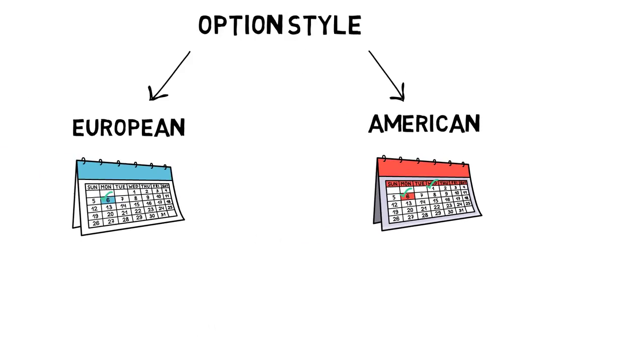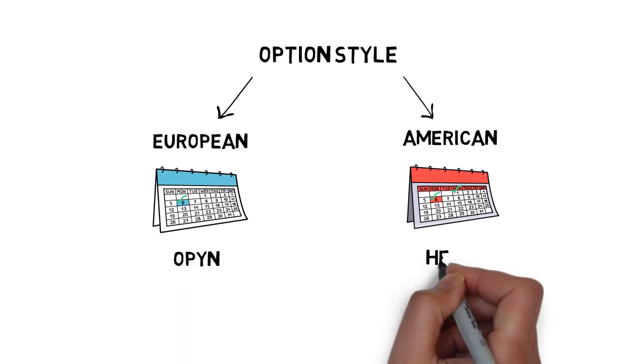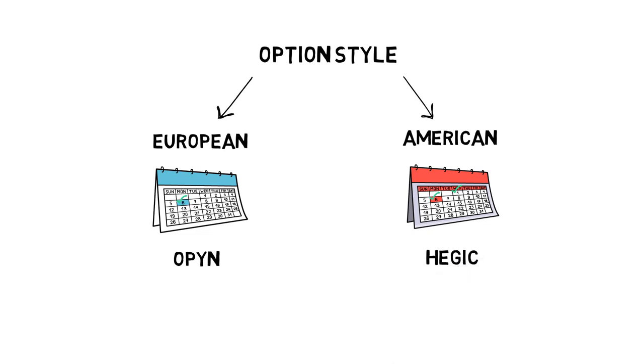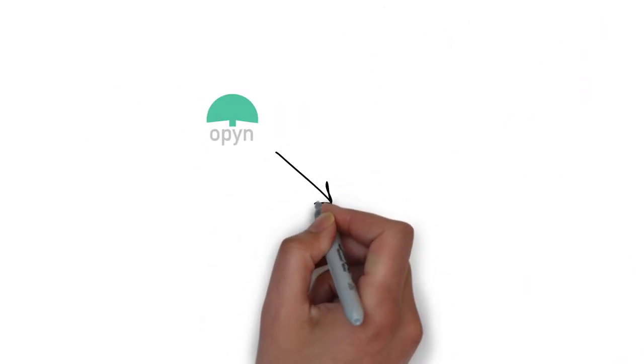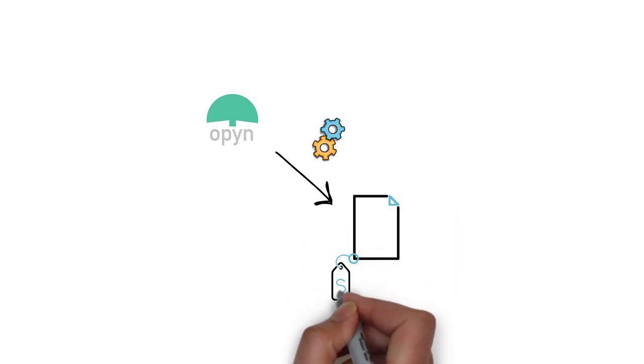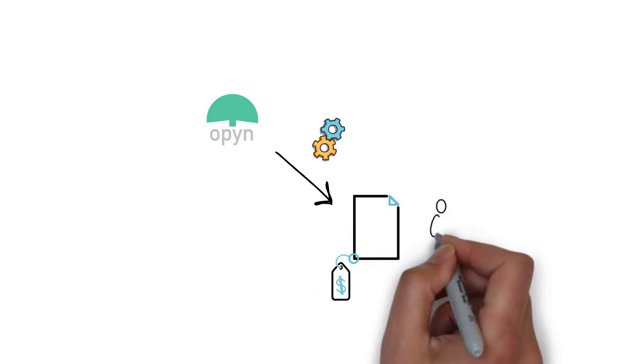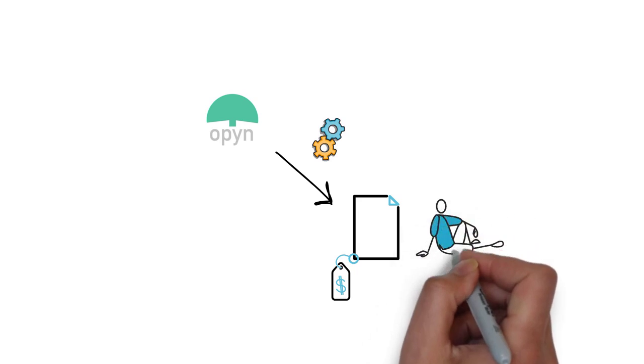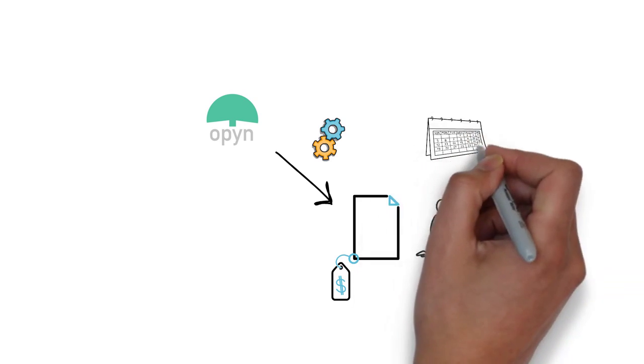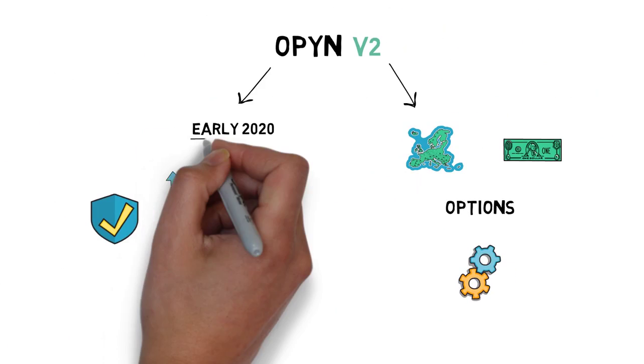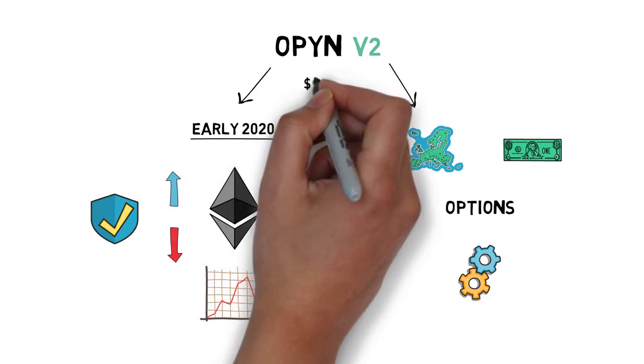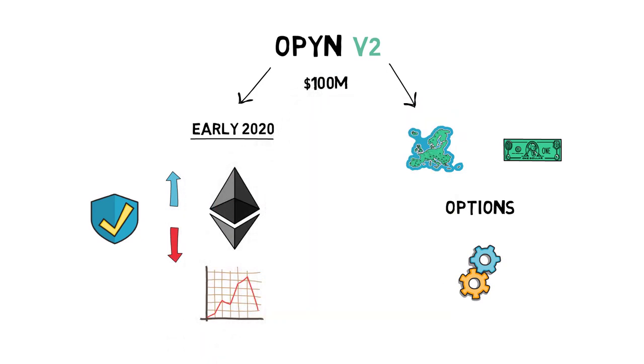In contrast to Opyn, Hegic uses American-style options. The Opyn protocol auto-exercises options that are in the money, so options holders don't need to take any action at or before the expiration date. Since its first release, the protocol had over $100 million in traded volume.